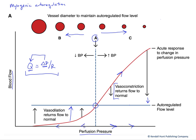This myogenic effect is helping us match our perfusion pressure to the flow required, through vasoconstriction or vasodilation caused by stretch or lack of stretch of those vessels in response to the driving pressure through them.